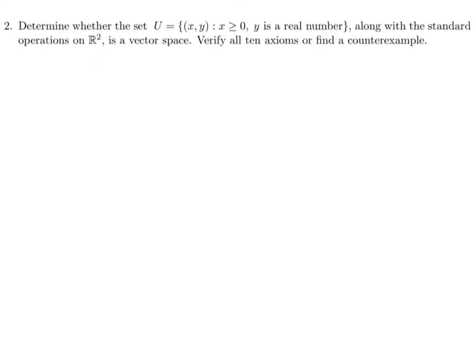Hi, welcome back. In this video, we're going to work through number two and number three from that worksheet. Number two says, determine whether the set U, consisting of all ordered pairs (x, y) such that x is greater than or equal to zero and y is a real number, along with the standard operations on R² is a vector space, and verify all 10 axioms or find a counterexample.